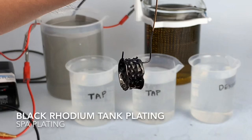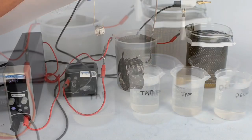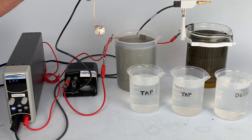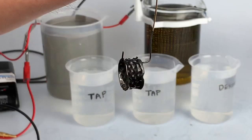Welcome to another spa plating training video. In this video we'll be demonstrating how to black rhodium plate on silver using our black rhodium tank plating solution. Our black rhodium plating solution plates a deep gun metal black layer and is ideal for plating on silver jewelry.